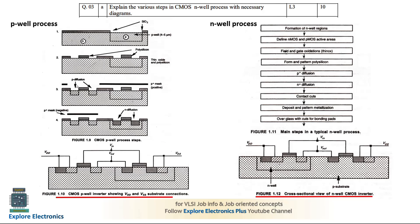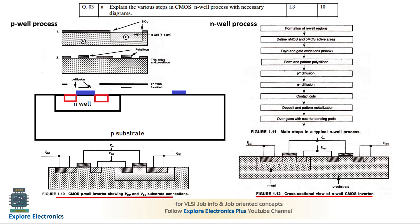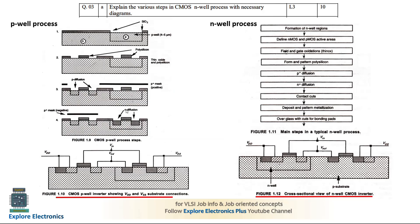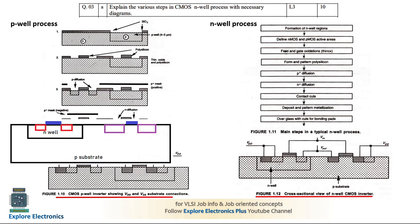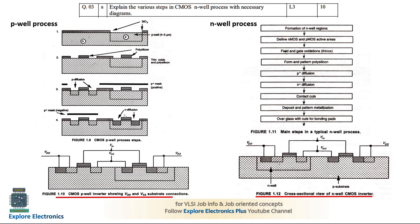At the right side there will be no well. Then we need to diffuse P — because in the N-well we need to make P-diffusion so that it will create a P-transistor. At the right side for the N-diffusion, we do N-diffusion in the P-substrate. The parent P-substrate will be there and you diffuse N into it — this step is also the same.